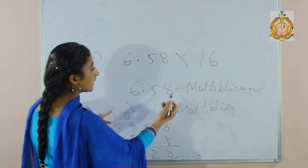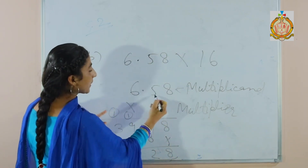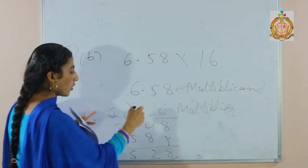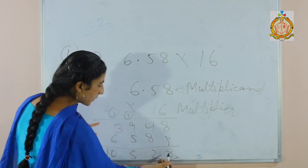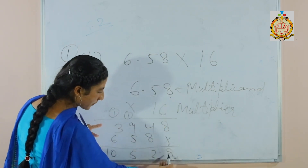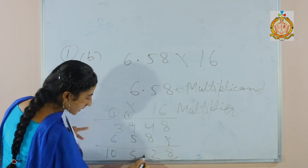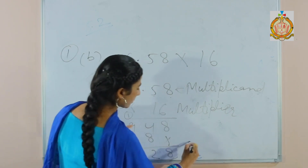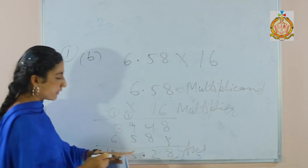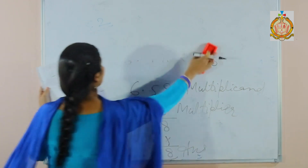See, in the multiplicand there are 2 decimal places: 1, 2. So put the decimal before 2 decimal places from the right — decimal will be here. So this is your answer: 105.28.